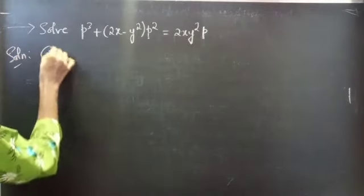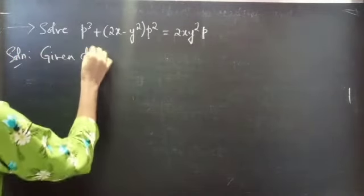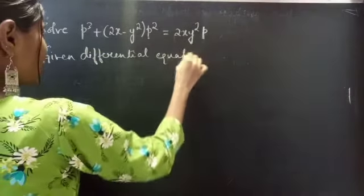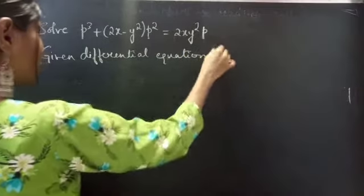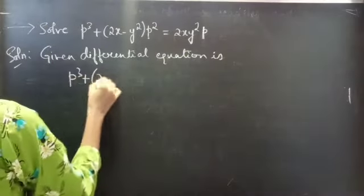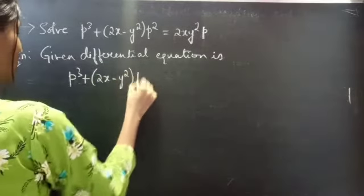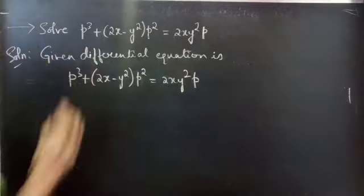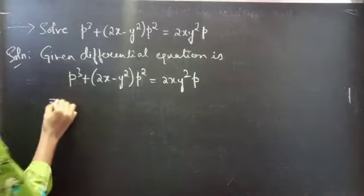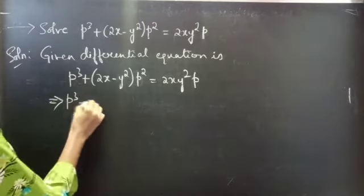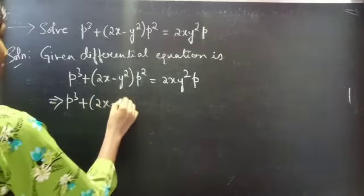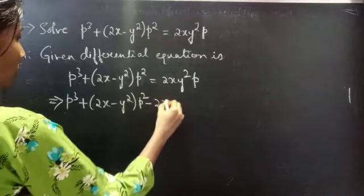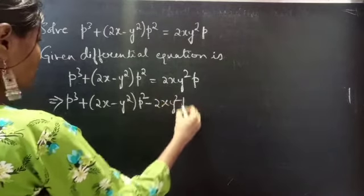The given differential equation is PQ plus 2X minus Y square into P square equals to 2XY square into P. You can rewrite it by taking this term to the LHS: PQ plus 2X minus Y square into P square minus 2XY square into P equals to 0.